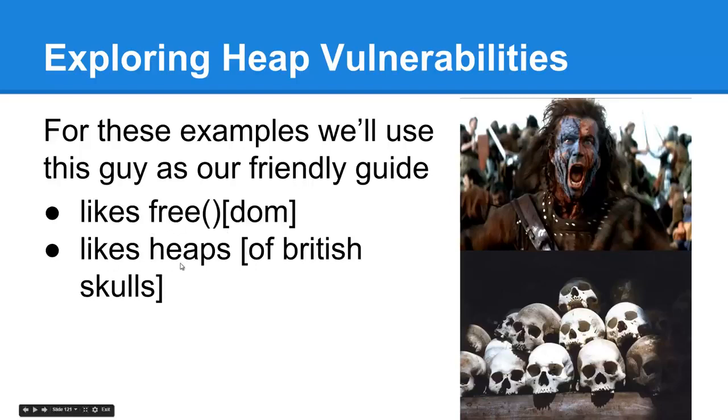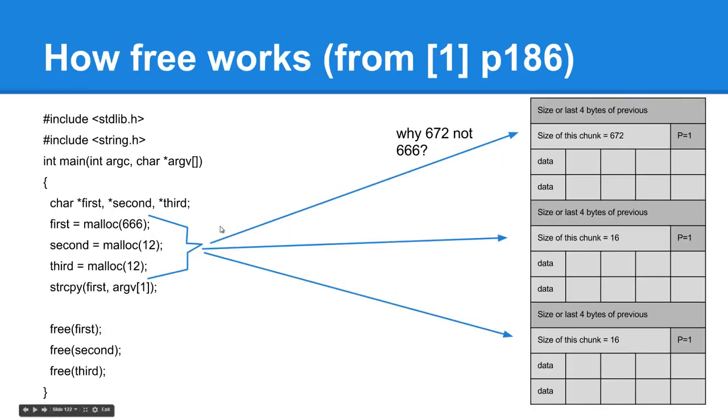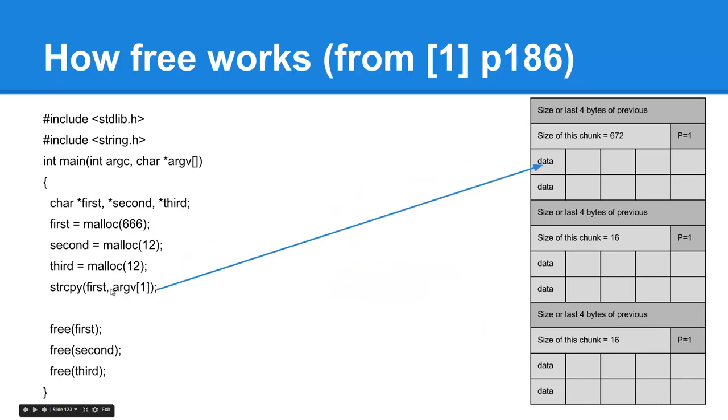For this, we're going to use this friendly guy on the right. He really likes free and he likes heaps. We have this code on the left. It's going to malloc these three chunk sizes, 12 and 666. The chunk sizes don't really matter here. It could all be 12 just for the sake of demonstration. Here we have a basic buffer overflow with an unsafe strcpy, just to demonstrate how this works. It's going to use the first pointer, which is going to point here. It allows the attacker, or the user, to input their data. Writing towards higher memory would go this way.